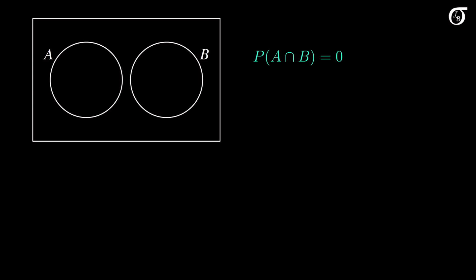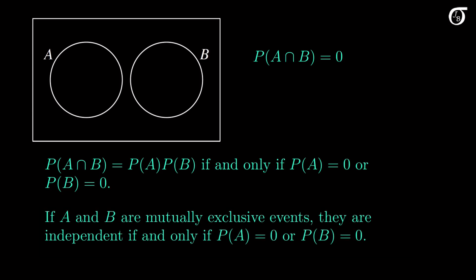But if the probability of the intersection is 0, that can only equal the product of the individual probabilities if the probability of A is 0, or the probability of B is 0, or both are 0. So if A and B are mutually exclusive events, they are independent if and only if the probability of A is 0, or the probability of B is 0.